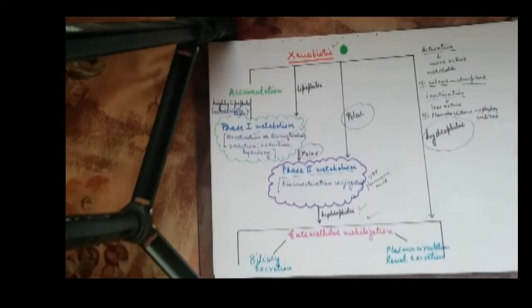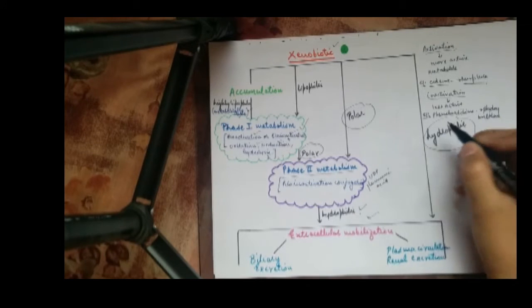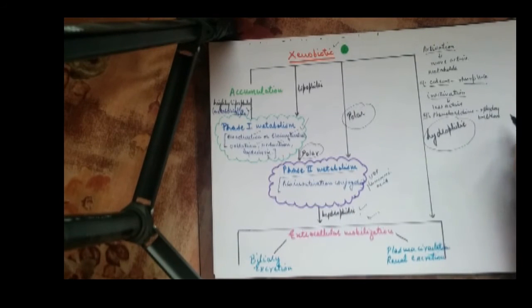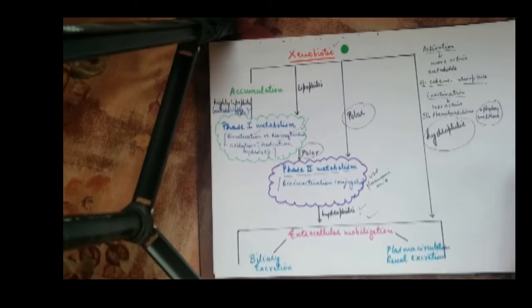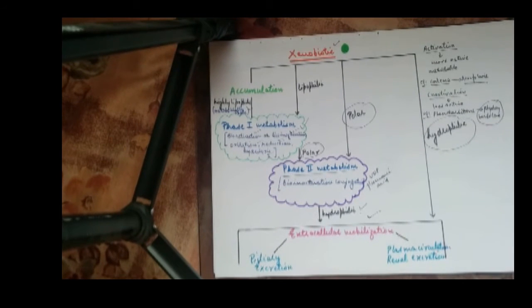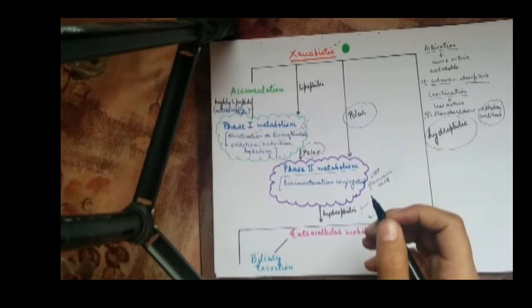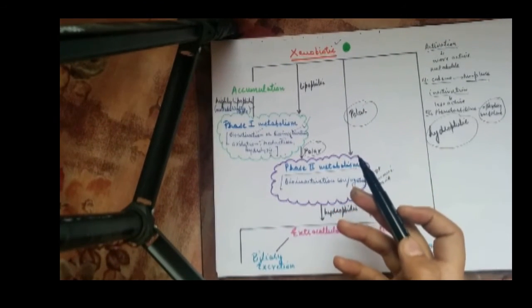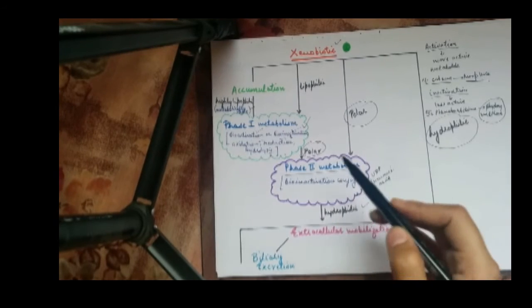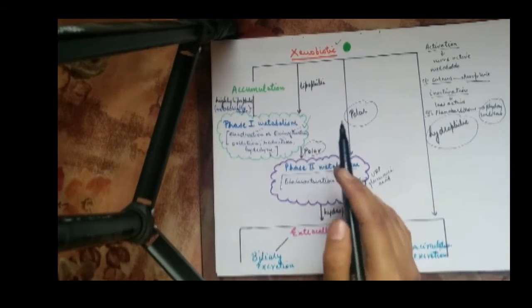An example of this type of inactivation may include the conversion of xenobarbiton to a less active substance called beta-hydroxy barbiton. Now, these phase one reactions of either activation or inactivation include reactions such as oxidation, reduction, and hydrolysis, as I've mentioned earlier.